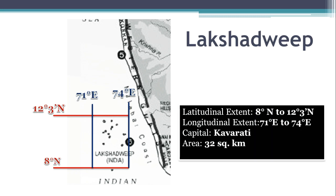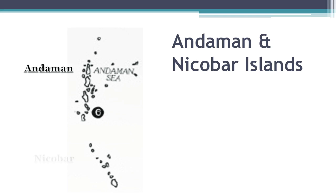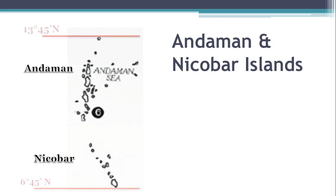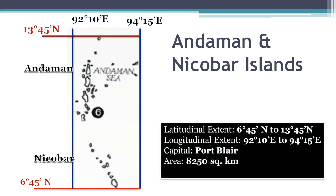Its total area is about 32 square kilometers. Now, Andaman Nicobar Island lies in the Bay of Bengal. The northern part is known as Andaman Island and the southern part is known as Nicobar Island. Its latitudinal extent is 6° 45' N to 13° 45' N, and longitudinal extent is 92° 10' E to 94° 15' E. Its capital is Port Blair, and its total area is 8,250 square kilometers.